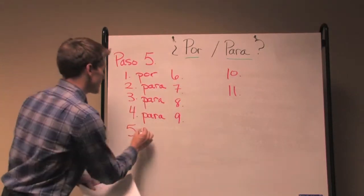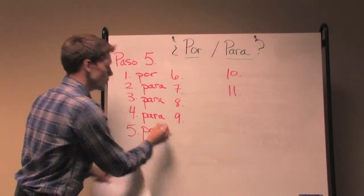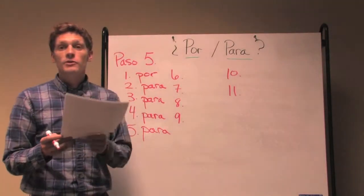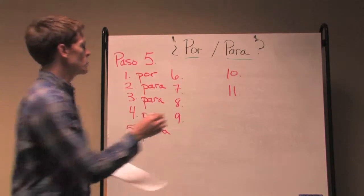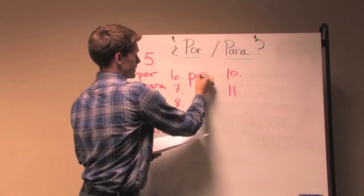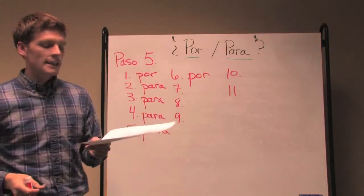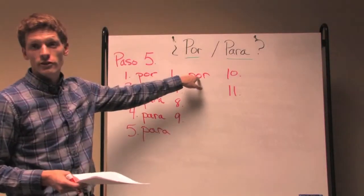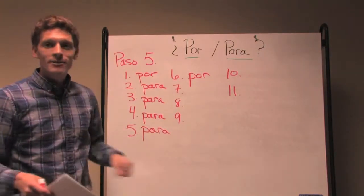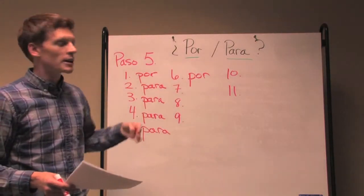So number five, para ir, in order to go, so objetivo, what do I have to do? Tengo que pasar por el centro de la ciudad. So I have to traverse this space, the downtown, viajar por.